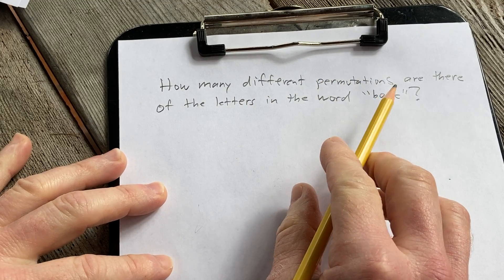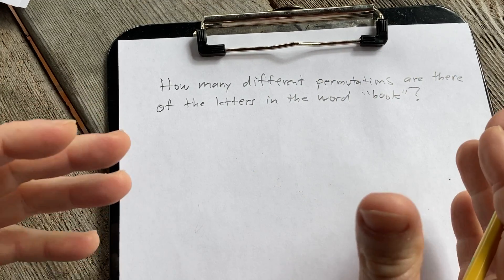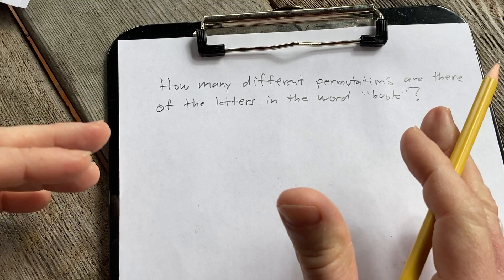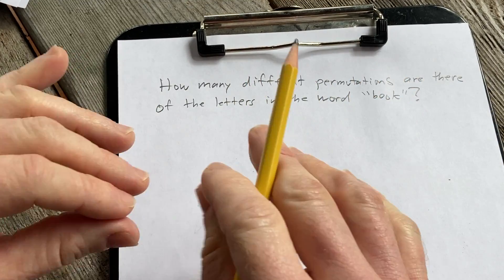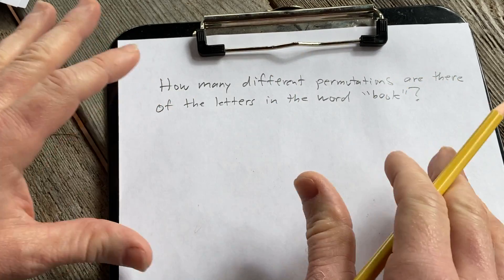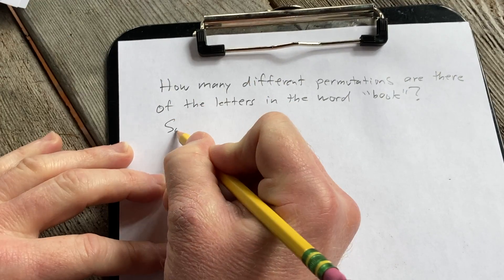how many different permutations are there of the letters in the word book? And you notice two of the letters are identical. So there is a formula you can use for this problem, but I thought it would be instructive and enlightening to do this problem just raw, no formula at all. Let's go ahead and work through it.